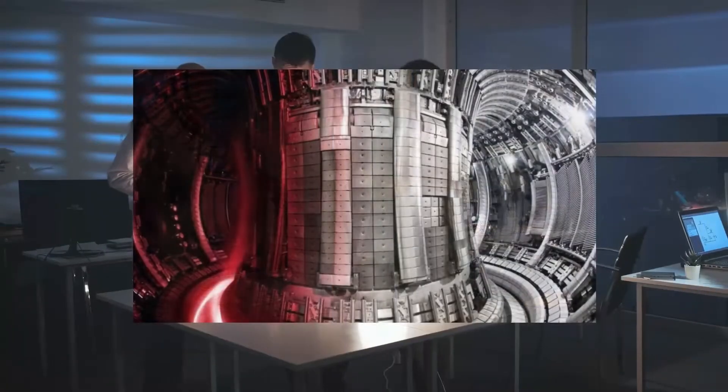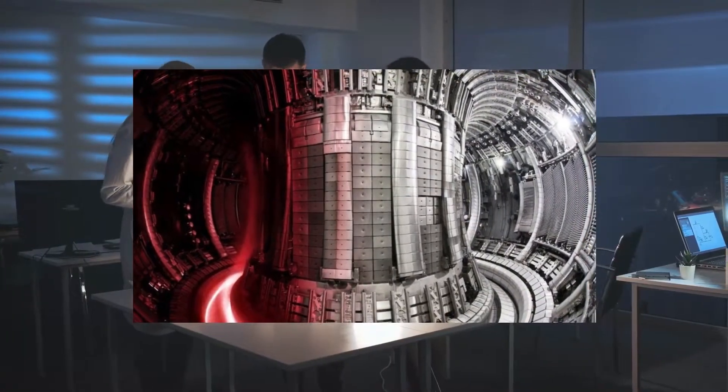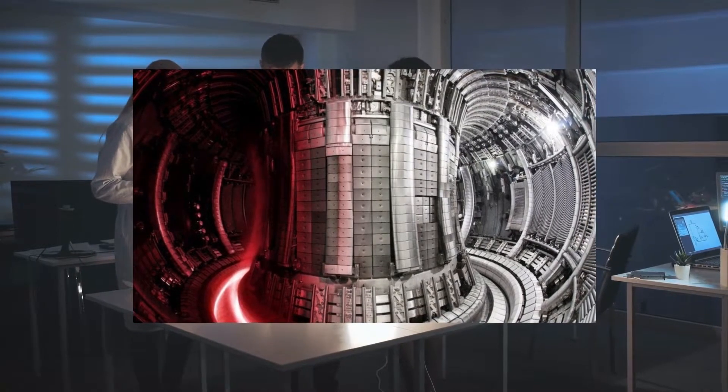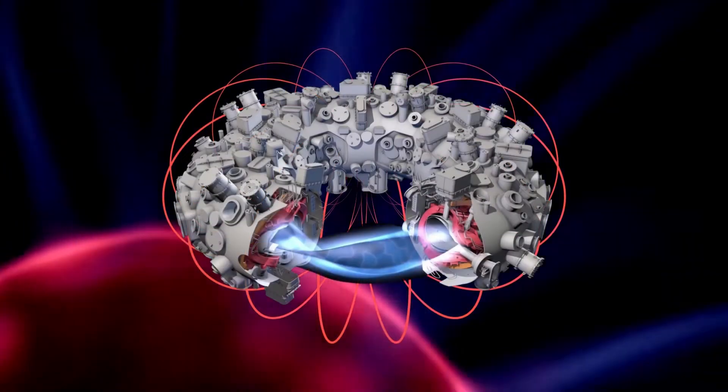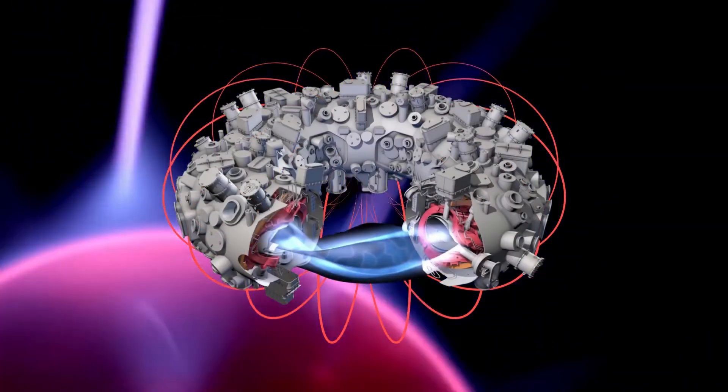In light of this, one of the primary goals of Stellarator optimization should be to reduce neoclassical losses. This will allow the Stellarator to catch up to the excellent confinement qualities of the tokamak. Because of this, the magnetic field of Wendelstein 7X was specifically designed to cut down on such losses.